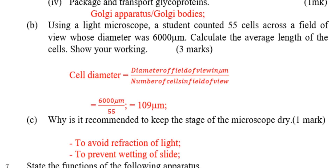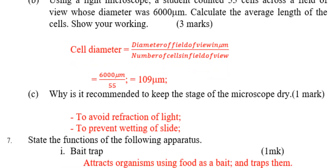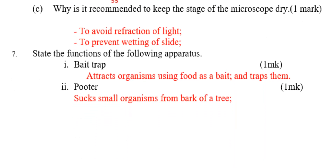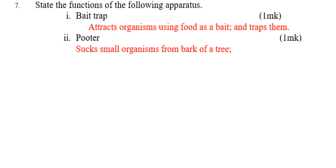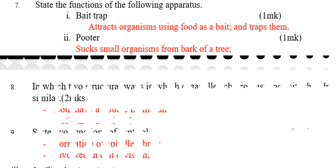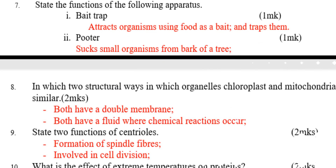Number seven: state the functions of the following apparatus. The pitfall trap attracts organisms using food and traps them. The pooter is used to suck small organisms from the base of a tree.